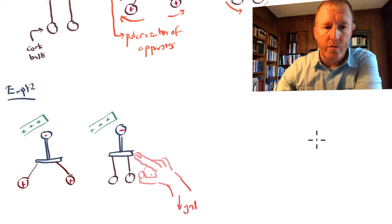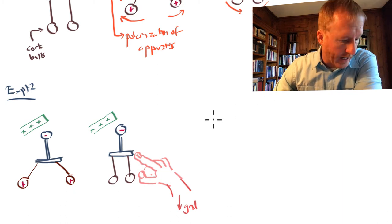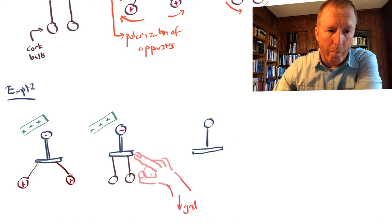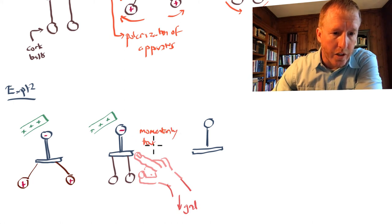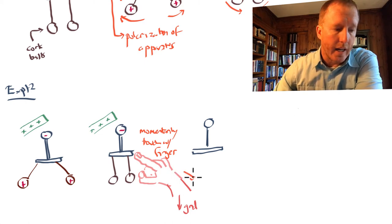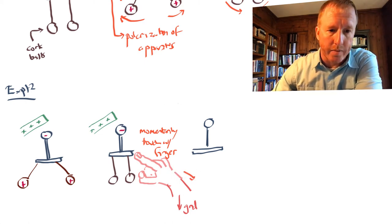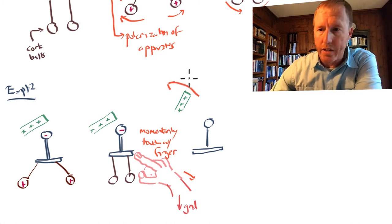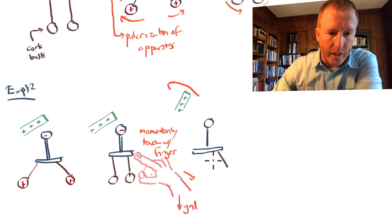Then what you do is you move your hand away — you remove your hand — and then you remove that glass rod. So you momentarily touch it with your finger, which neutralizes these. And then after touching it, you move your hand away. And then when you move that glass rod away, what he notices is that these balls once again swing apart.